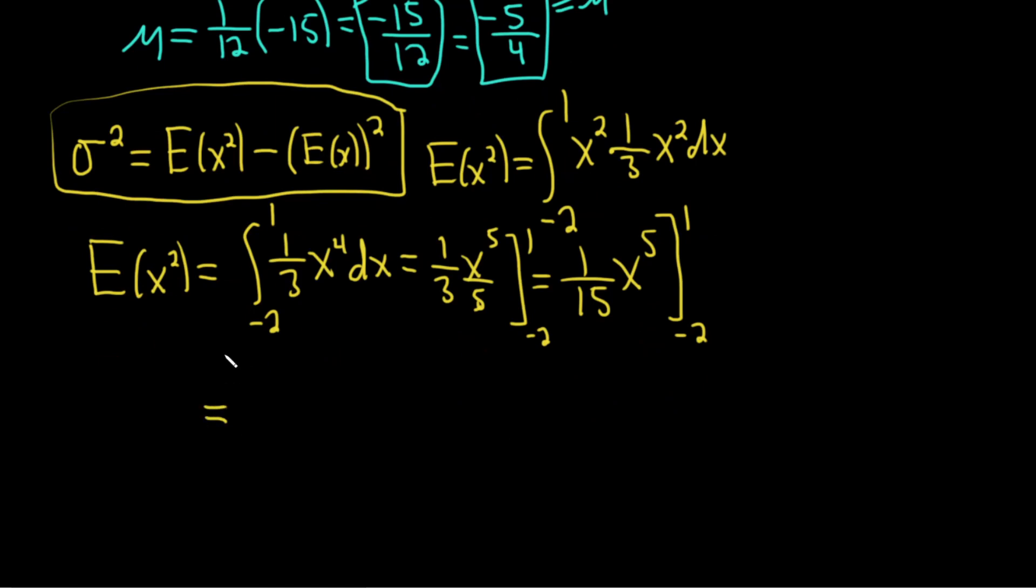This equals, plugging in 1, one-fifteenth times (1 to the 5th, which is 1, minus negative 2 to the 5th). Since it's a negative number raised to an odd power, it becomes negative 32.